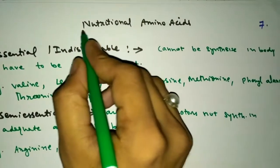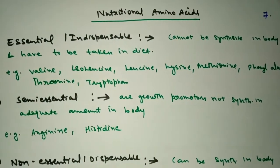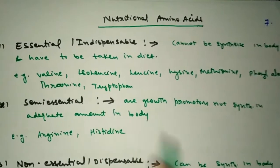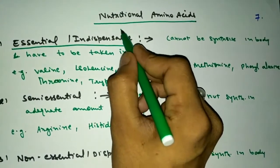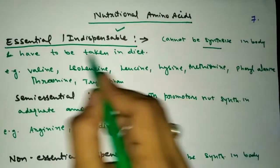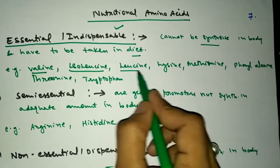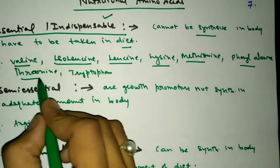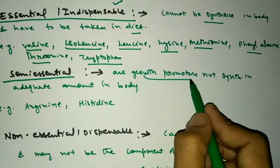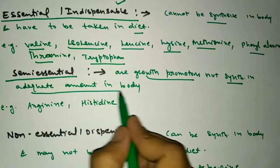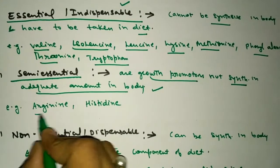The next classification is the nutritional classification. These amino acids contribute to nutrition, growth, and the digestive components of the body. First are the essential or indispensable amino acids, which cannot be synthesized in the body and must be taken in the diet: valine, isoleucine, leucine, lysine, methionine, phenylalanine, threonine, and tryptophan. Second are the semi-essential amino acids; they are growth promoters but are not synthesized in adequate amounts in the body. These are arginine and histidine.